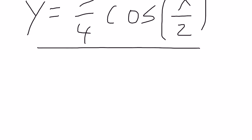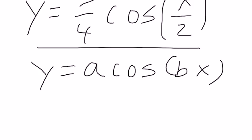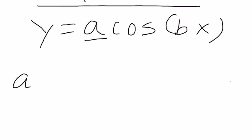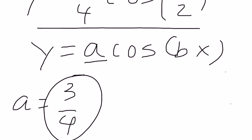So the amplitude, A sine, oops, cosine of B times x. So our amplitude is our A value. A in this case is 3 4ths. So our amplitude is 3 4ths.